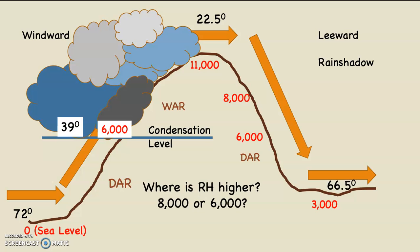This is a little harder. Where is the relative humidity higher — 8,000 feet on the leeward side or 6,000 feet on the leeward side? As the air descends from 11,000 down to 3,000 feet on the leeward side, the temperature of that parcel is warming. And remember, as air temperature goes up, relative humidity goes down. So the relative humidity at 11,000 feet is 100%, but the minute that air begins to descend the backside of the mountain, it warms up, air temperature goes up, and relative humidity goes down. The closer we are to 11,000 feet, the closer we are to 100% relative humidity — or conversely, the further we are from 11,000 feet, the further we are from 100% relative humidity.